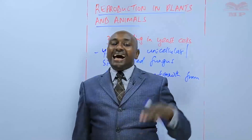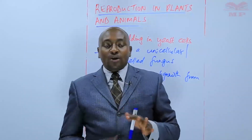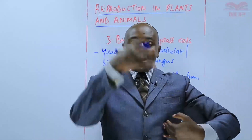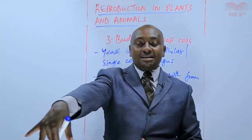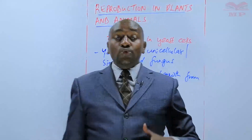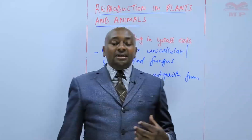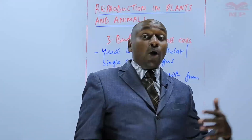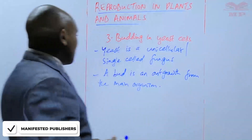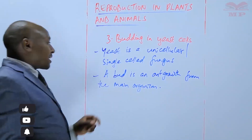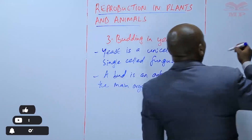That outgrowth becomes another organism — another cell of the yeast — while it is still attached to the main yeast cell. Another outgrowth then develops on another side and also develops into another yeast cell. This process continues until we have very many outgrowths that form a mass of yeast cells. A bud is an outgrowth from the main organism.